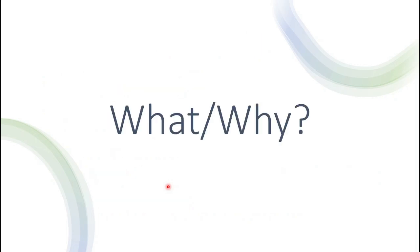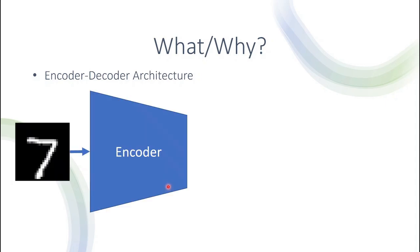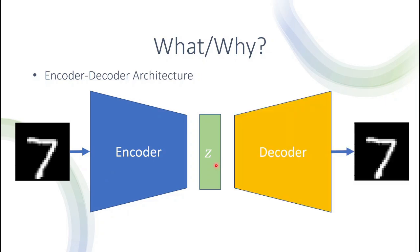Let's start with the what and why. In the previous video we talked about the encoder-decoder architecture. This model receives an input — say an image — into the encoder. The encoder then reduces the image to a lower dimensional space, usually denoted as z, and then the decoder reconstructs the same image.